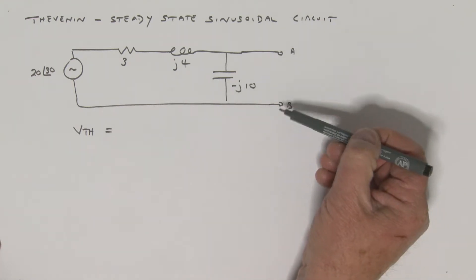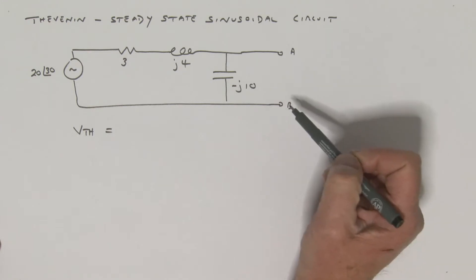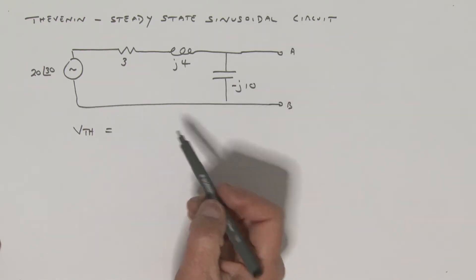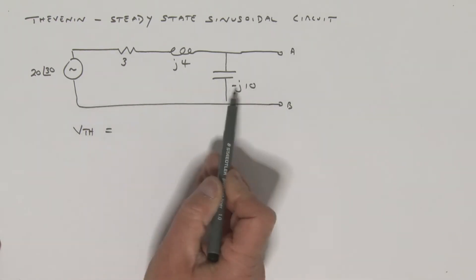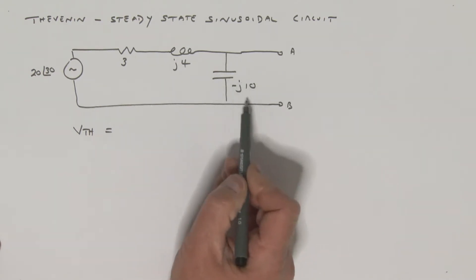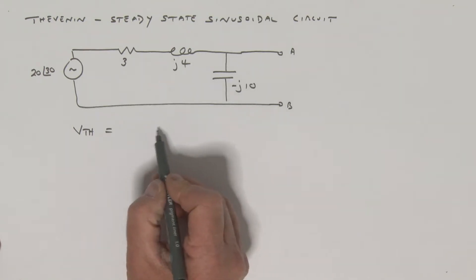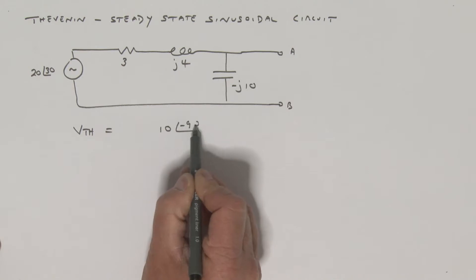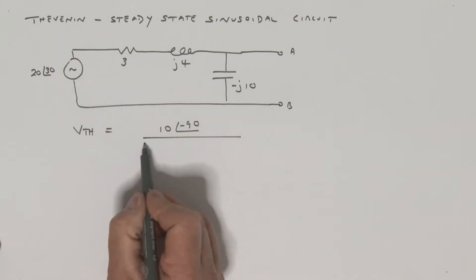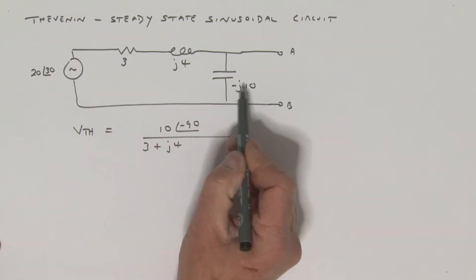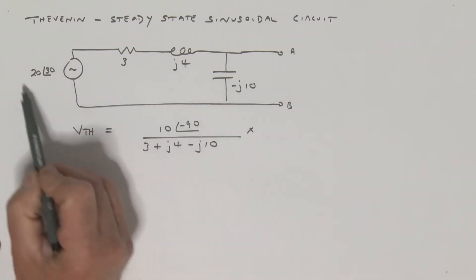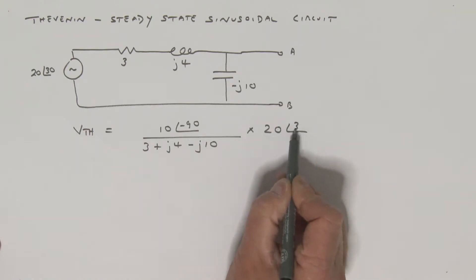Here are our terminals A and B, and this is where we would attach a load if we're going to use this circuit. So the load is removed. Let's see what that voltage would be. Well, it's a voltage divider. So we've got this impedance here. Let's write this straight away in its polar representation. That would be 10 at an angle of minus 90, divided by the sum of the impedances in that circuit, which would be 3 plus J4 and this term over here, which is minus J10. And that, of course, is multiplied by my source voltage, which is 20 at an angle of 30.